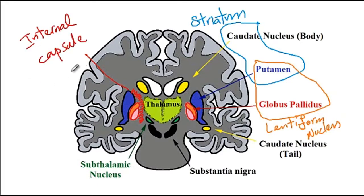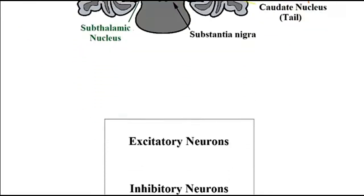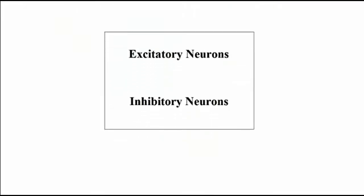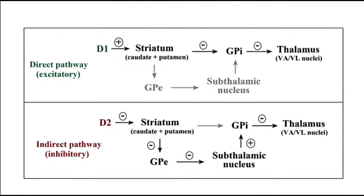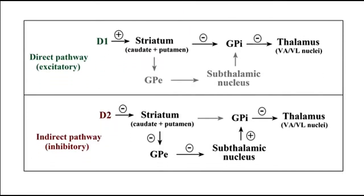The internal capsule contains the fibers going into and out of the cerebral cortex. There are two types of neurons that communicate between the basal ganglia structures: excitatory neurons, which release glutamate to activate neurons, and inhibitory neurons, which release GABA to inhibit the function of other neurons. Next, I'll go over the function of the basal ganglia and explain how it controls movement.